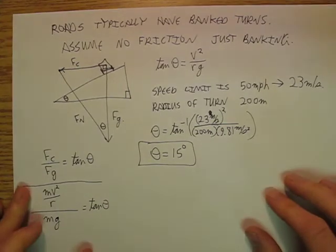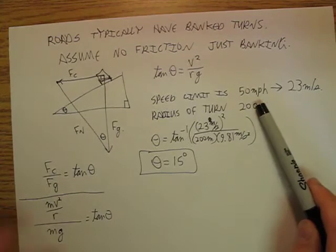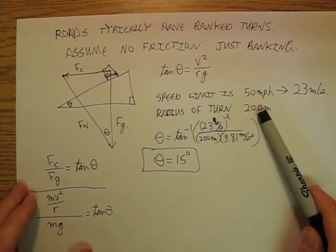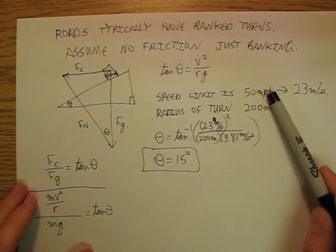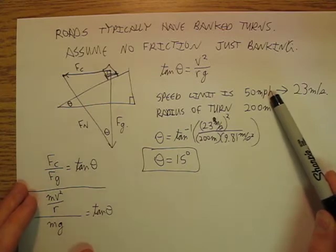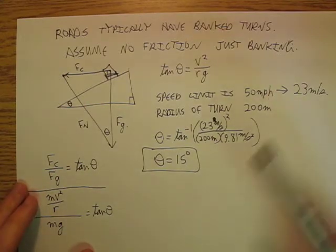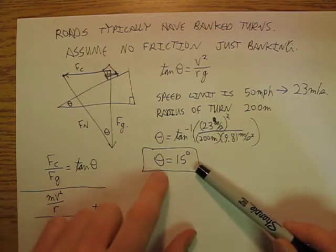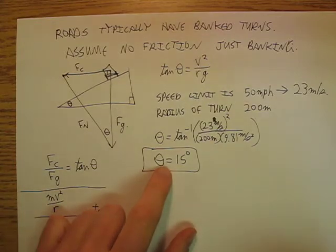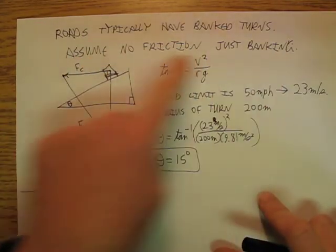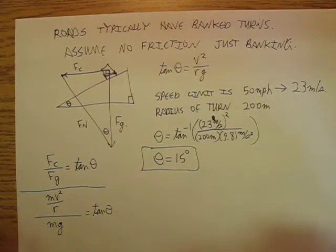So, if I want to have a turn that has a radius of 200 meters, and people are going on that at 50 miles per hour, I'm going to want it to have a banking of 15 degrees. If we're going to assume there's no friction, so this would be on a really icy day.